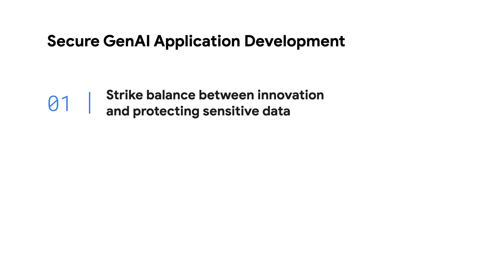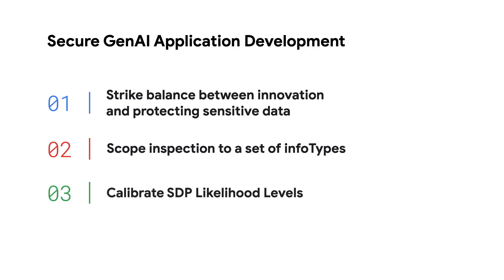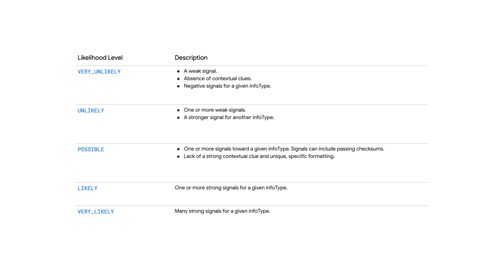What were some of the decisions customers should think about when deciding to use sensitive data protection to filter their LLM responses? When developing generative AI applications, customers should think about striking a balance between creating innovative and engaging user experiences and protecting against sensitive data exposure. To do that, I'd recommend thinking about how to calibrate a few variables. First, scope your inspection set to a set of infotypes that make sense for your organization and application. SDP comes with 150 predefined infotypes that are great, but if you have something specific to your organization — like a secret project name or a funky customer ID — think about creating a custom infotype too. The next piece would be to calibrate an appropriate risk tolerance for your organization by defining the SDP sensitivity level. This will allow developers and security teams to tailor the control to ensure the application remains both secure and user-friendly.